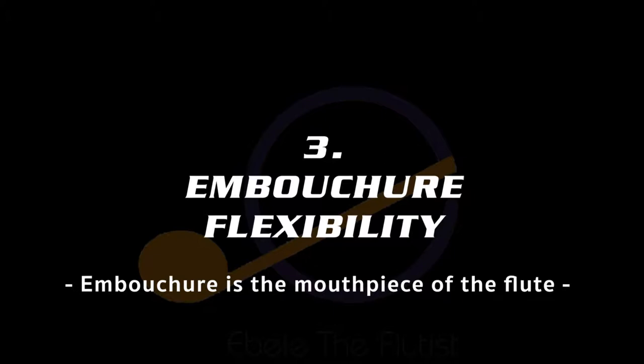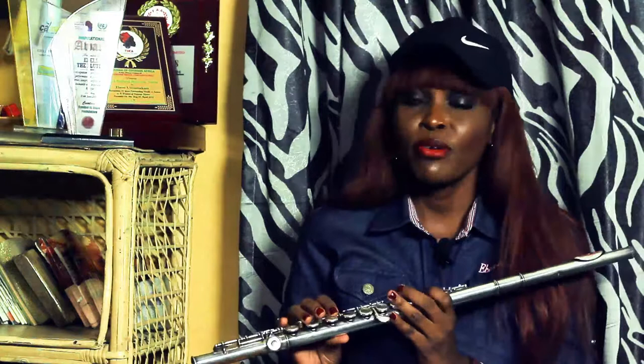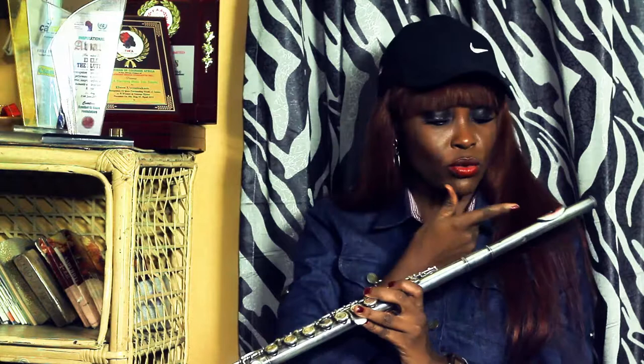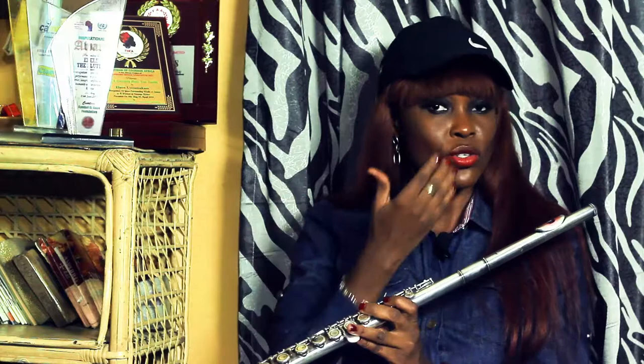The third lesson is embouchure flexibility. I just talked about the embouchure as a technique, and then the flexibility of how to get it right. In my previous lessons, I talked about how you can use fruit to get a particular key to get different sounds. That actually happens with your flexibility of how you can get the embouchure. That's what I mean by embouchure flexibility.